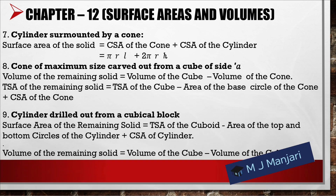Eighth, cone of maximum size carved out from a cube of side a: volume of remaining solid = volume of cube − volume of cone; total surface area of remaining solid = total surface area of cube − base area of cone + curved surface area of cone. Ninth, cylinder drilled out of a cubical block: surface area of remaining solid = total surface area of cuboid − area of top and bottom circles of cylinder + curved surface area of cylinder; volume of remaining solid = volume of cube − volume of cylinder.